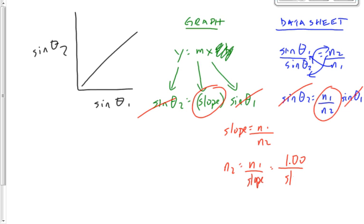N2 is going to be 1.00, the index of refraction of air, divided by whatever you got for the slope there. And because it's glass it should be somewhere in the range of 1.5-ish, although you may get a number that's a little bit more, a little bit less. If you measure your angles well and you're careful with it you should get good data. You should get a number for the index of refraction that is in that range of 1.5.